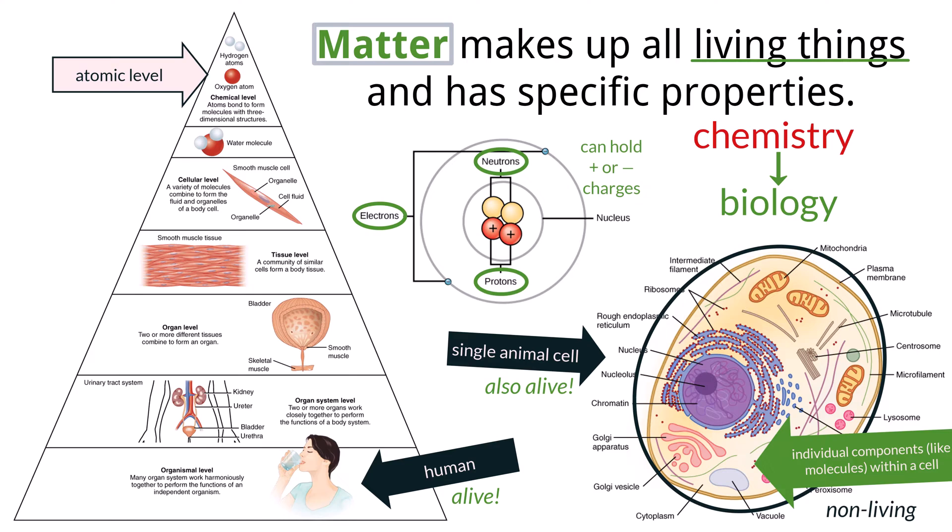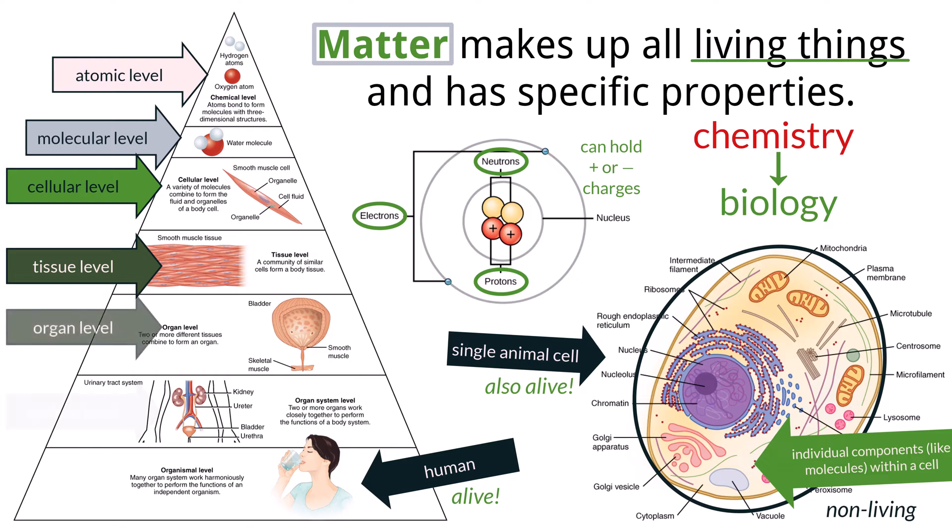When atoms are bound together with other atoms, they create compounds and molecules. These are then put together to create cells, and cells are put together to create tissues and so on through organs and systems until we get a complete organism.